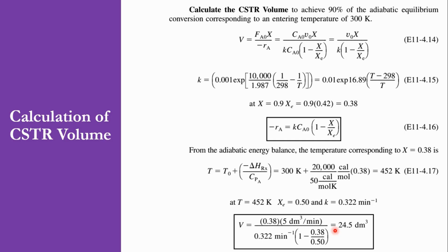So this is the overall calculation of how to express -rA as a function of K, CA0, X, and Xe; how to calculate the equilibrium conversion and equilibrium temperature; and how to calculate the CSTR volume. I hope you have understood all the aspects of this lecture. If you have any queries, feedback, or suggestions, please provide them in the comment box. Please like, share the video, and subscribe to the channel. Thank you. Goodbye.